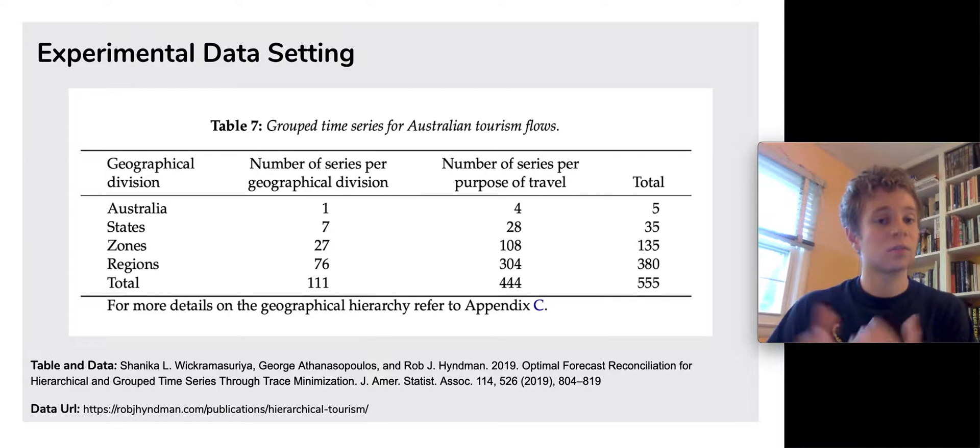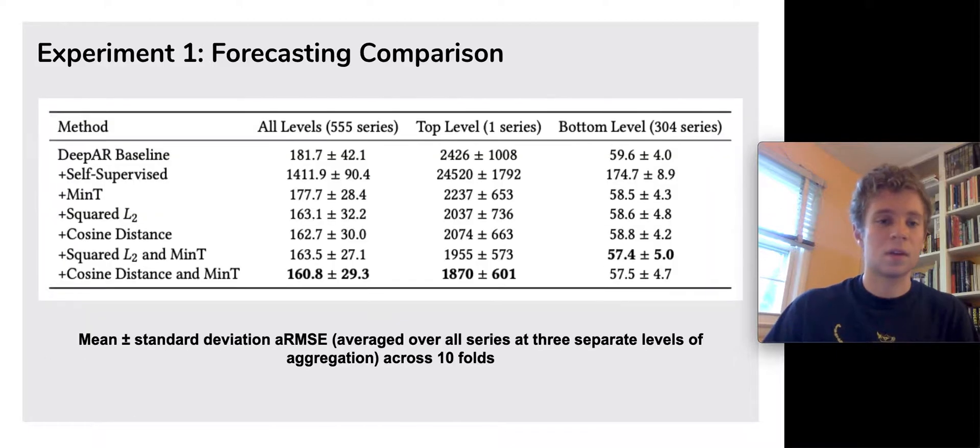Moving on to the empirical results, we evaluated our approach on a dataset of Australian tourism flows. Our first experiment demonstrated that our approach outperformed the state-of-the-art minimum trace reconciliation, and that by combining the two approaches, even better performance could be achieved.